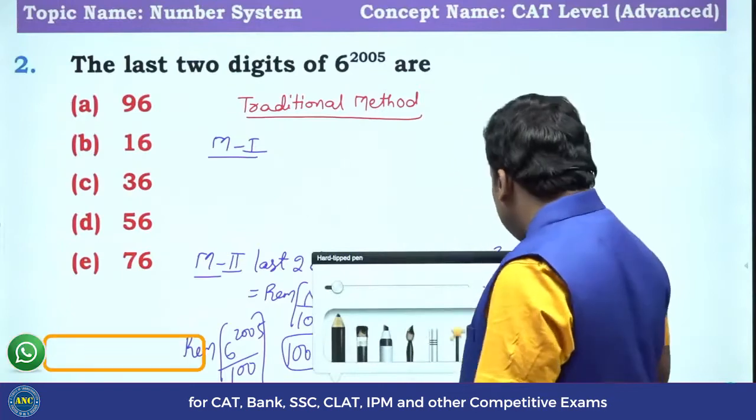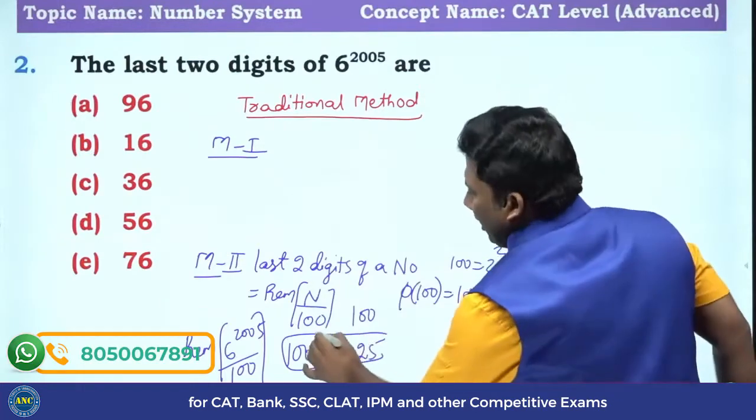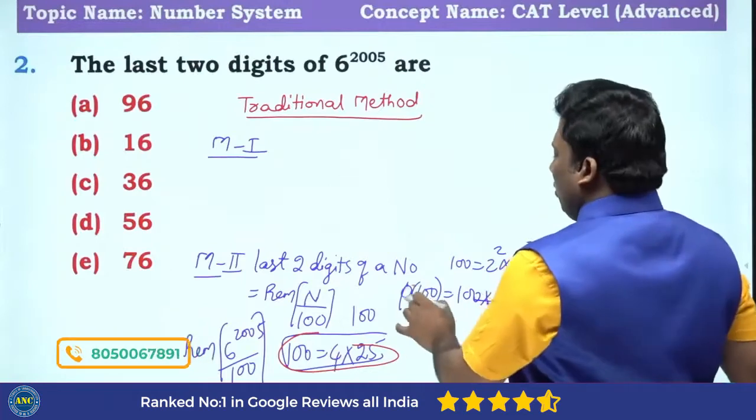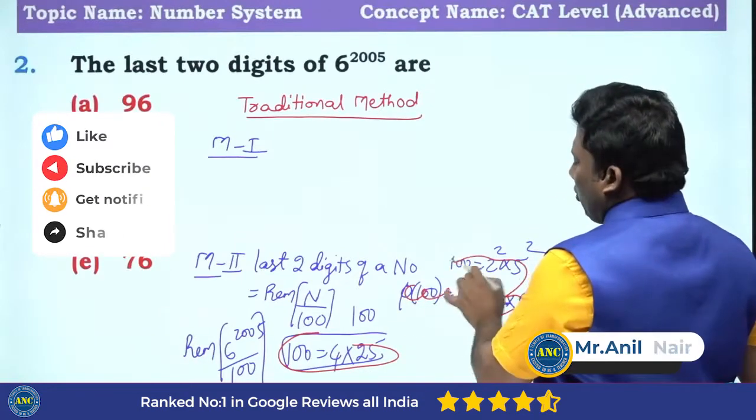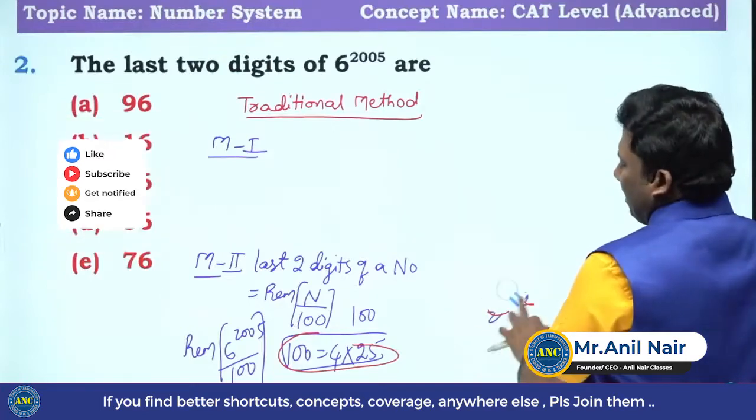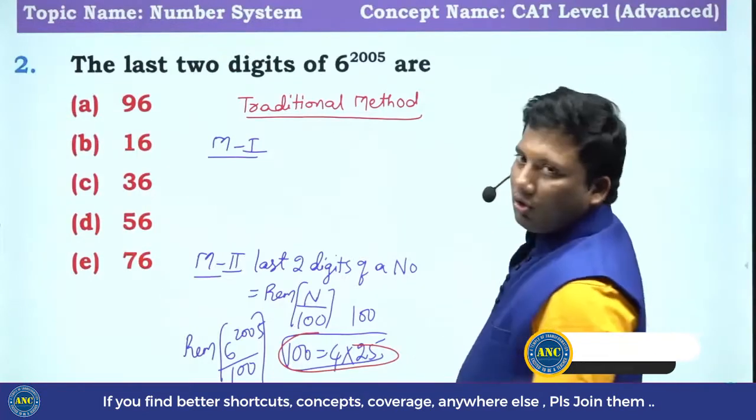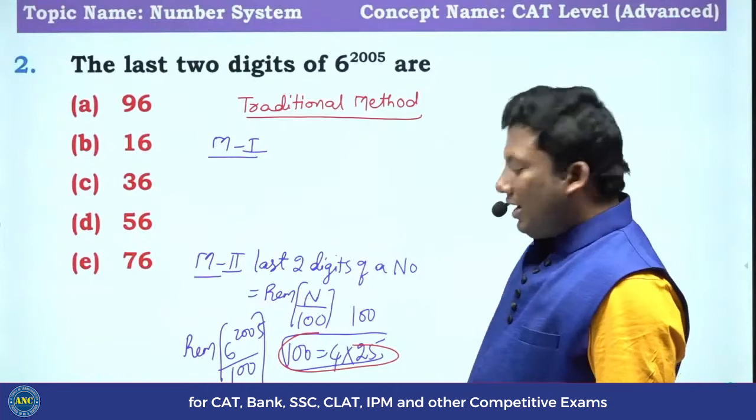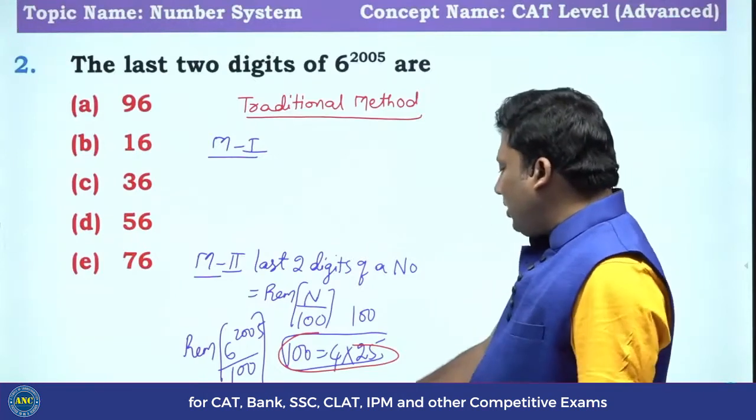These 100 equivalent to 4 into 25. Numerator and denominator are not co-prime, so Euler's method - definitely after taking the factors common only we have to do. 6 is an even number, 100 is an even number. This is one method they will solve.